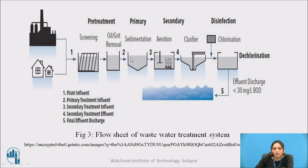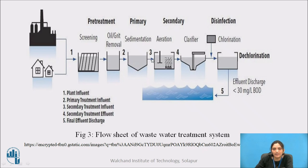After pre-treatment, water goes for the primary treatment. In the primary treatment, sedimentation occurs — heavy particles settle down at the bottom due to gravity and are removed from the bottom. After the primary treatment, the wastewater goes for aeration. In aeration, oxygen is introduced into the sample and it purifies it, removing some dissolved gases. After that, it goes for the secondary treatment, which is the clarifier. The concept of the clarifier and sedimentation is the same — heavy dust particles settle down at the bottom due to self-weight and are removed from the bottom.